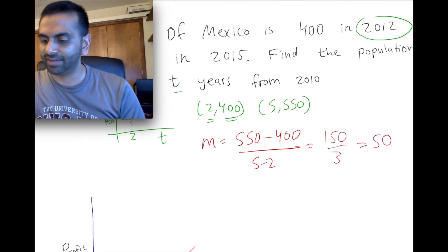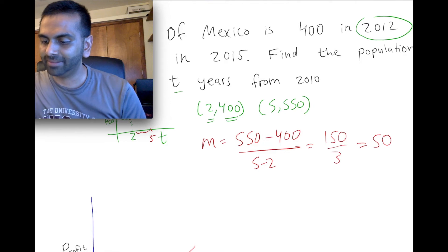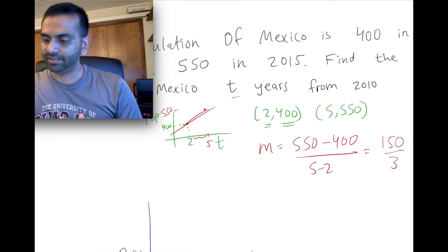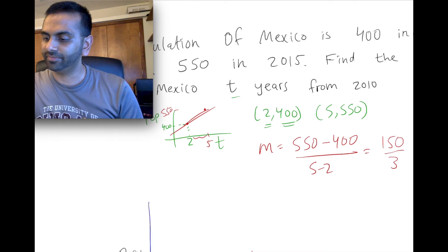Which kind of makes sense, because, hey, if the two points are 2 comma 400 and three years later, the population is 150 more, well, then that means it's basically growing by 50 per year, right? So looking at this like this. Okay, three years later, if it's 150 more, that's the slope of 50.